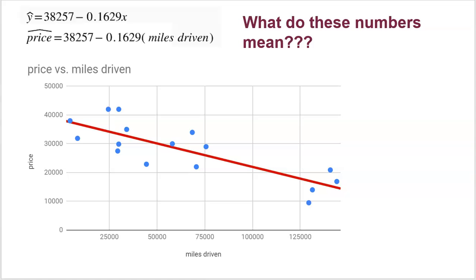Here we have an example where we looked at the explanatory variable of the miles on 16 trucks and the response variable of the price of those trucks. We clearly see a beautiful, linear, negative, fairly strong relationship. As the miles on a truck goes up, the price of that truck goes down — that's just common sense if you know anything about used truck prices.